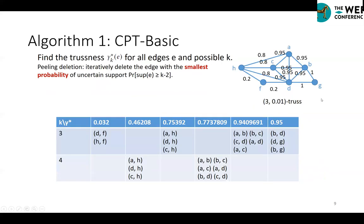So how to determine the value of gamma-star? We can first calculate the support probability of all edges, and then remove the edge with the smallest support probability in turn.